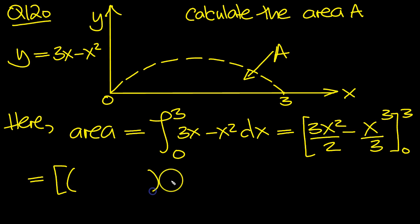Top value take bottom value. Put 3 in. 3 squared is 9, so it's 3 times 3 squared which we can write as 9 over 2, minus 3 cubed is 27 over 3. Minus, put 0 in and we get 0 all the way through.